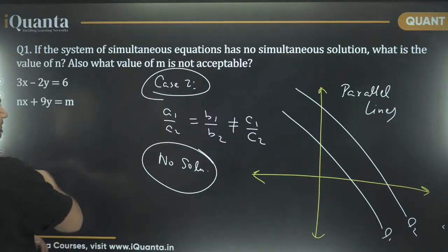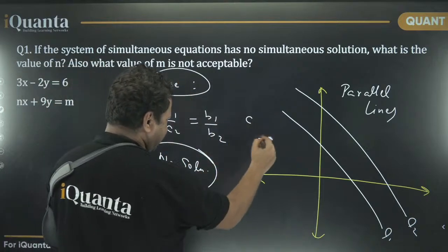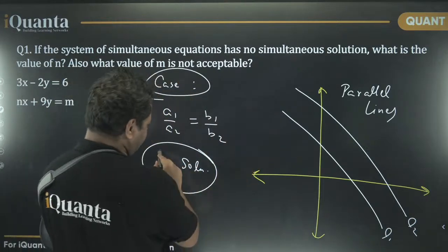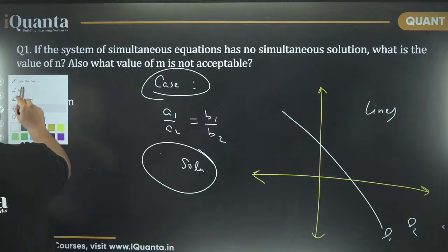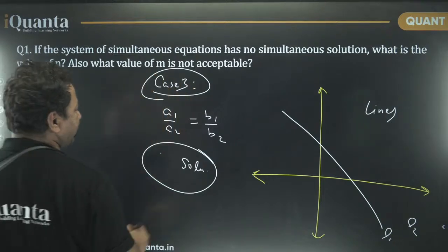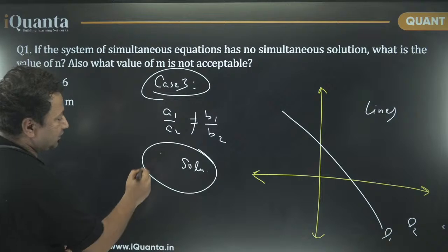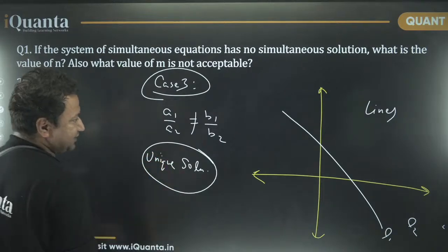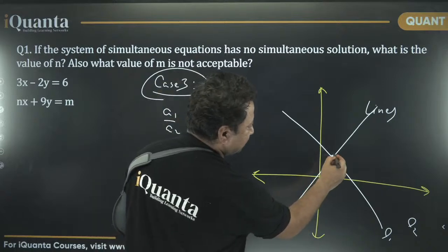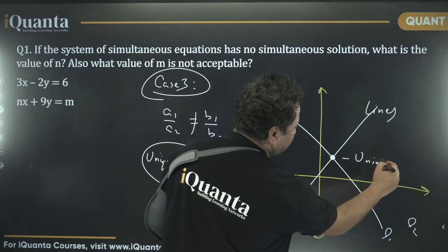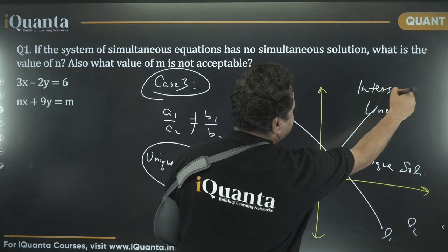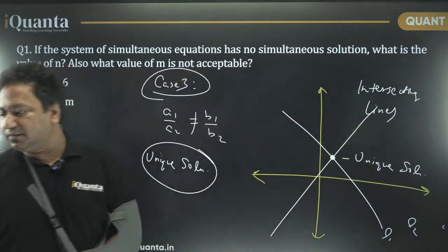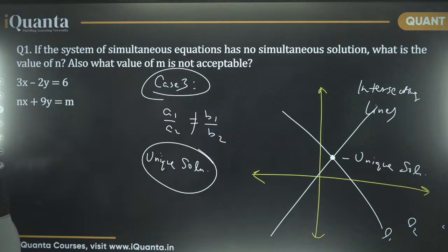What has to be the case 3? Case 3. Here, A1 upon A2 would not be equal to B1 upon B2. Here, I will get a unique solution. There will be one point of intersection. This is the first line. Second line will be something like this. So, this is the point of intersection and that is what we call as unique solution. Intersecting lines.